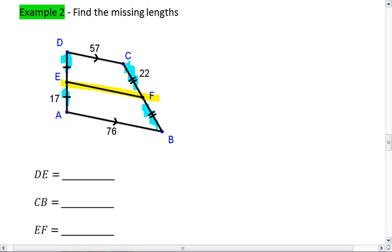So if EA is 17, then DE is also 17. If CF is 22, then FB is 22, which means CB is 44.